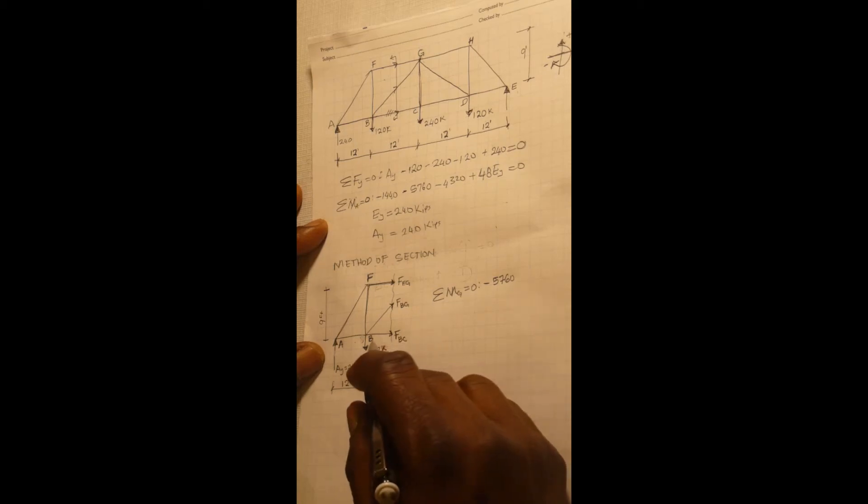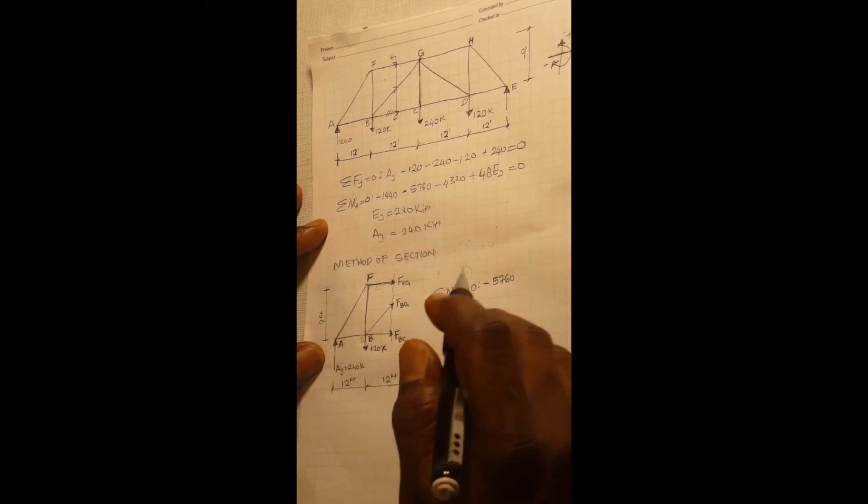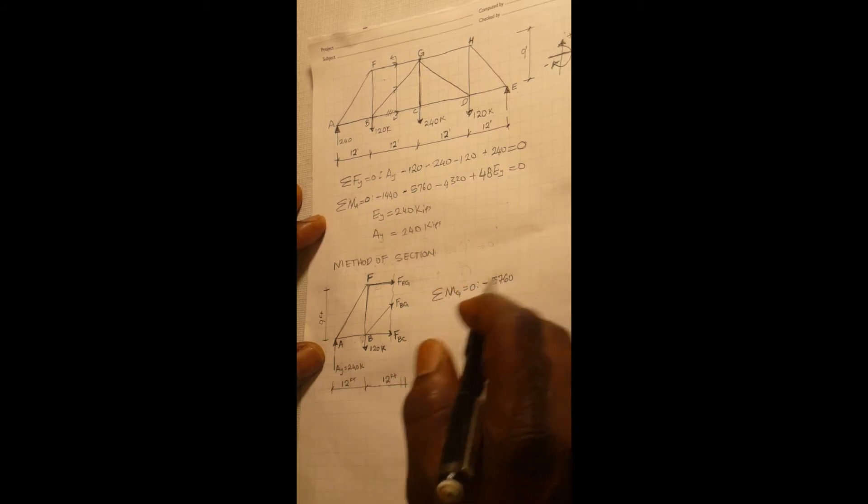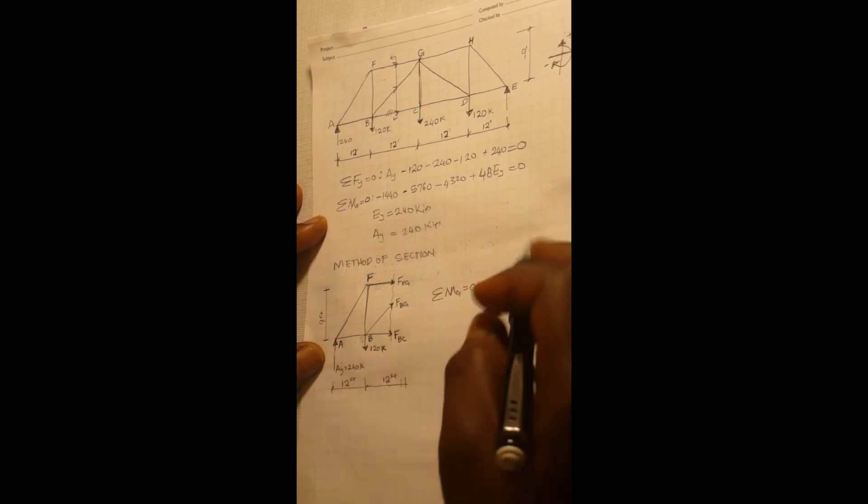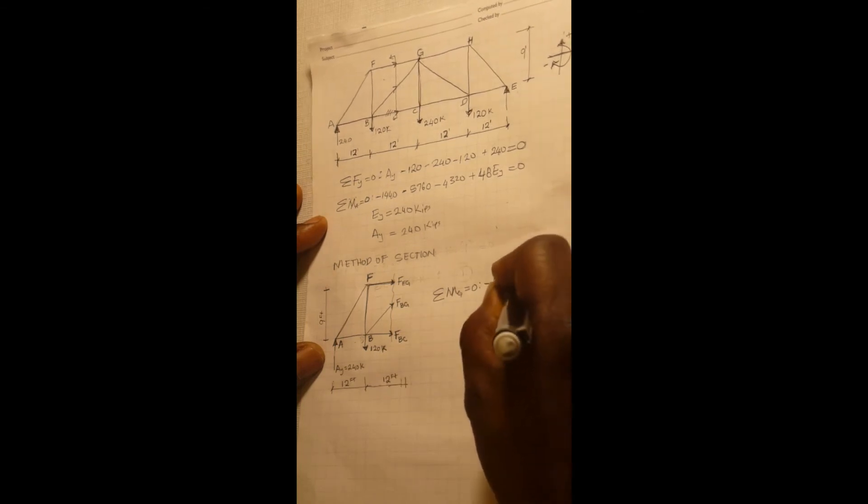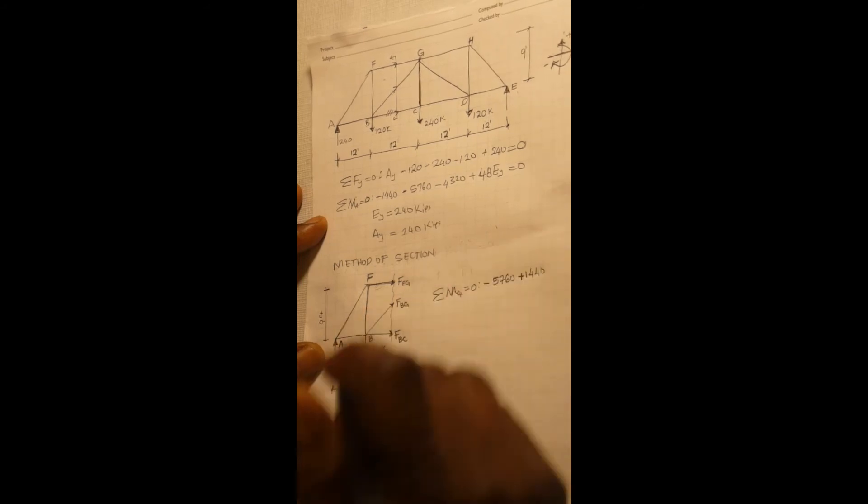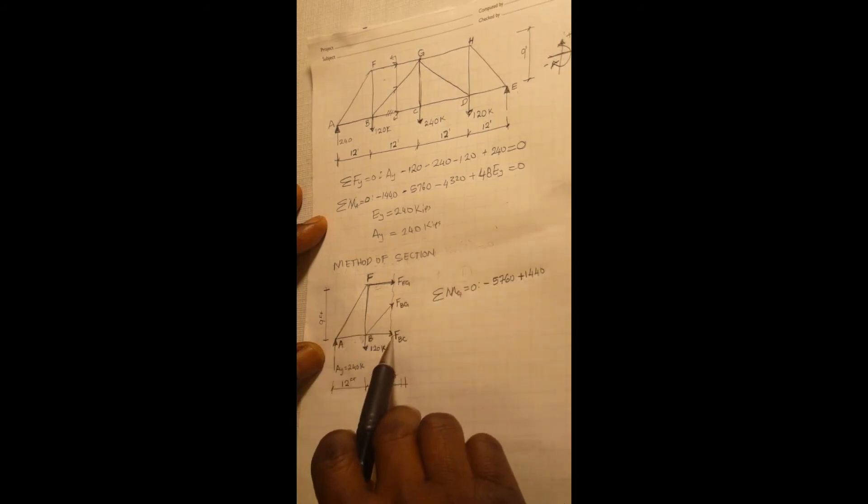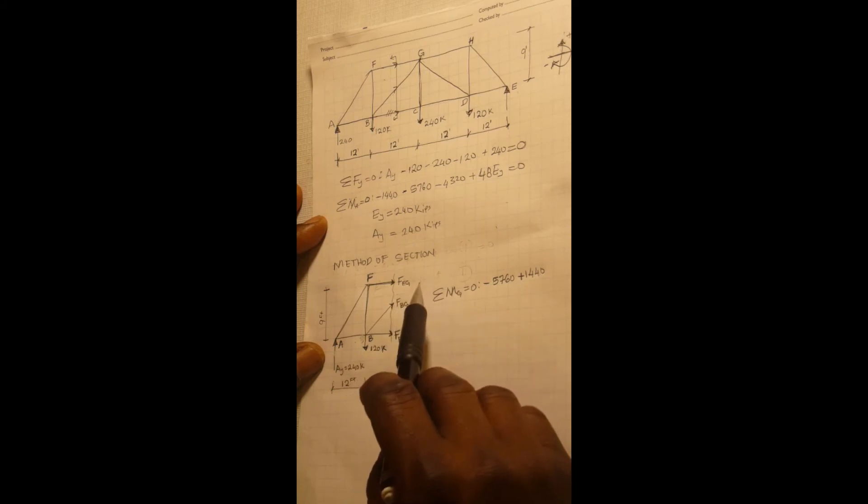a counterclockwise rotation. And that would be 120 multiplied by 12, that gives you 1440, and it's positive. And now, like I said, force EG and force BG meet at the point of our moment, which is point G. So those two forces will not contribute to this moment.